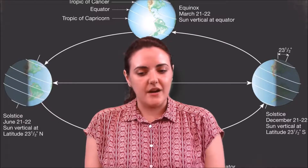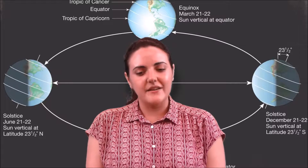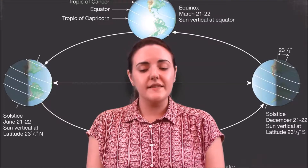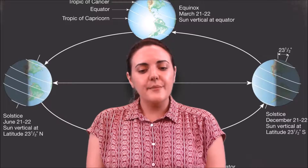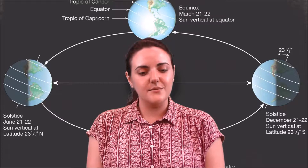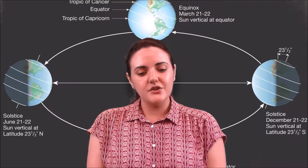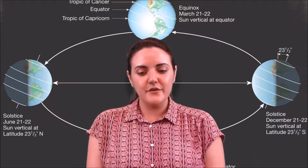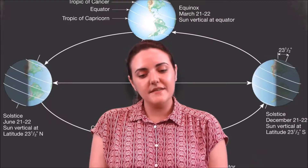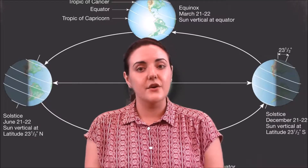Vernal equinox and autumnal equinox are classical names derived directly from Latin — ver meaning spring and autumnus meaning autumn. These are the historically universal and still most widely used terms for the equinoxes, but are potentially confusing because in the southern hemisphere the vernal equinox does not occur in spring and the autumnal equinox does not occur in autumn. The equivalent English terms spring equinox and autumn or fall equinox are even more ambiguous, though it has become increasingly common to refer to the September equinox in the southern hemisphere as the vernal equinox.